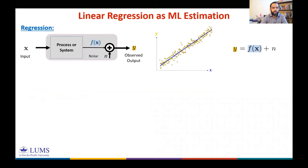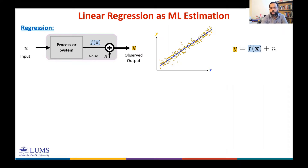That's how we define regression. For a process that is mathematically defined by f, we have an input x and the output of a process is f. f is corrupted by additive noise noted by n, and what we observe is y. So given y and given x, we want to estimate — we want to predict f, the function mapping from input to the output.